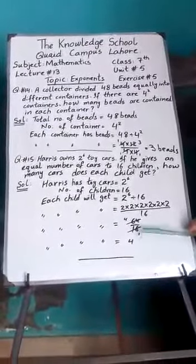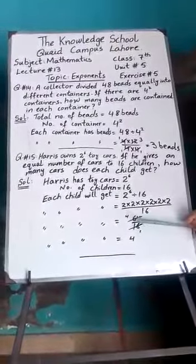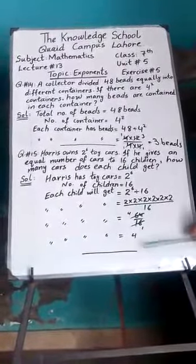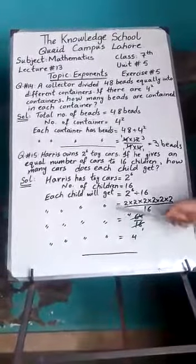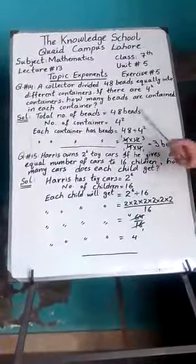So we will get 64 divided by 16. Now 64 and 16, using 16's table we can cancel: 16 ones are 16, and 16 fours are 64. So we will get answer 4. Each child will get 4 toy cars.